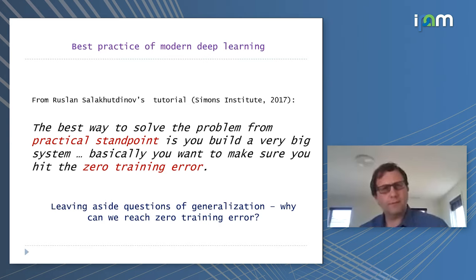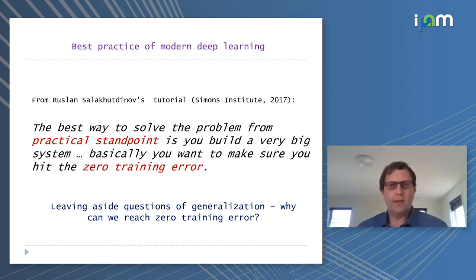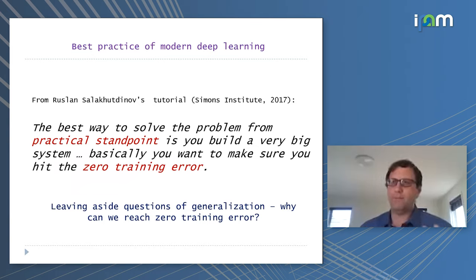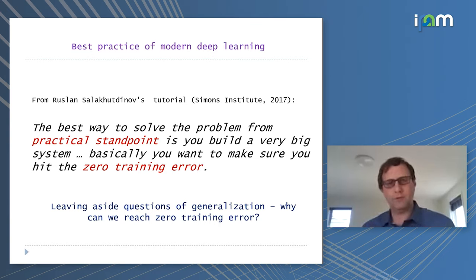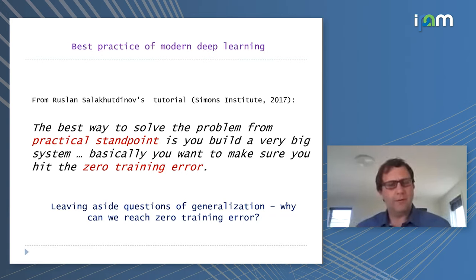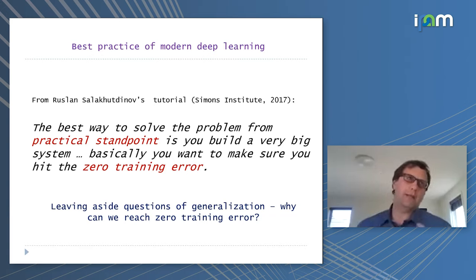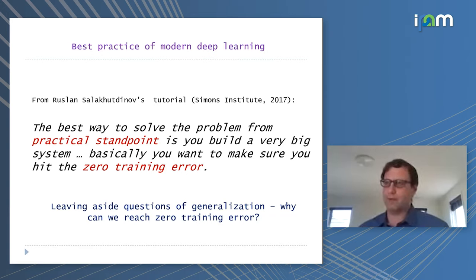What Ruslan said is: the best way to solve the problem from a practical standpoint is to build a big system and make sure you hit zero training error. This is the first step — there was no implication that you should stop at this point. But this already has some very interesting things about it.